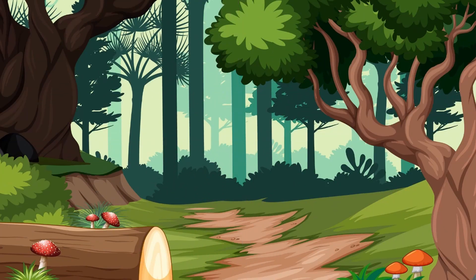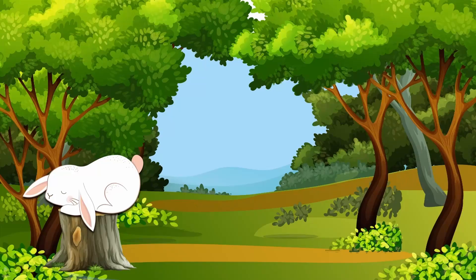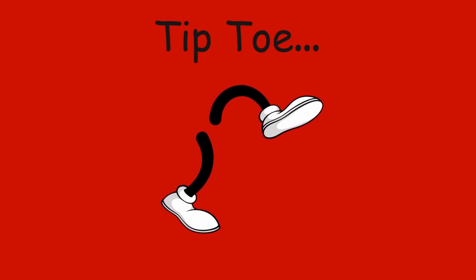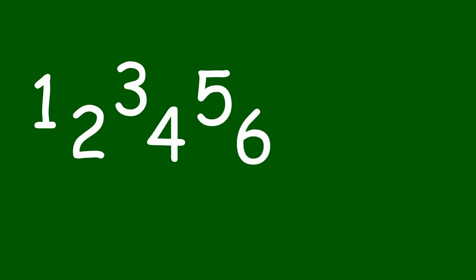We're going on a nature walk, you and me. We're going on a nature walk. What animals will we see? Oh, look. There's a rabbit. Shh. Tiptoe quietly. Let's not wake her up. Tiptoe. Let's count. One, two, three, four, five, six, seven, eight, nine, ten.